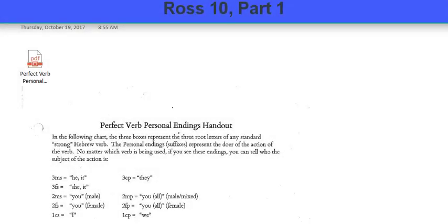Let's go to Ross chapter 10. This is page 86 in your book. So you can go ahead and flip your book open to that point.